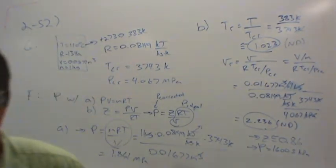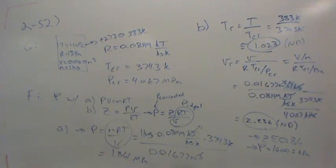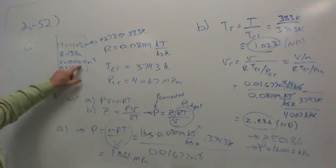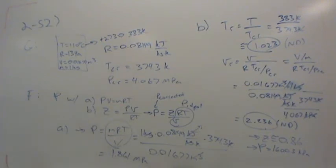The compressibility chart result of 1.6 megapascals matches the actual given value very closely. The odd tank volume of 0.01677 cubic meters was given for a specific reason — you can verify this by looking up R134A properties in the back of the book, either in the saturated or superheated tables, to confirm the actual pressure.